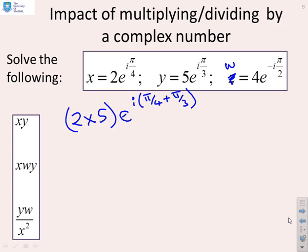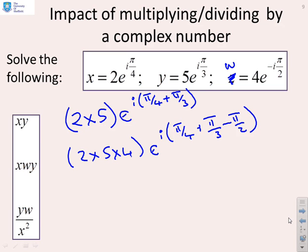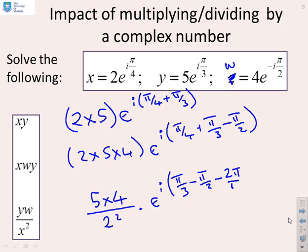What about xyz? Then I get 2 times 5 times 4 for the moduli, and then e to the i, pi by 4 plus pi by 3 minus pi by 2 for the argument. And the final one, yw over x squared, I'm going to get 5 times 4 over 2 squared into e to the i, and then I'm going to get pi by 3 minus pi by 2 minus 2 pi by 4.